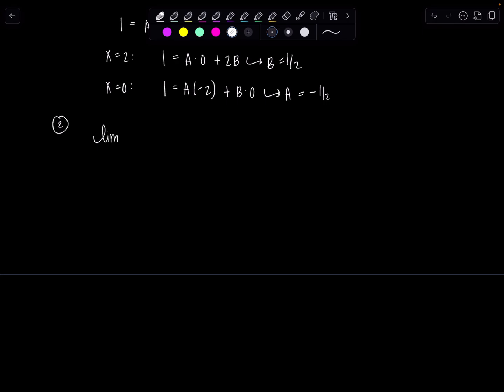It was the limit as b approaches zero from the right, the integral from b to one. And then we have a is negative one half over x plus b is one half over x minus two, dx.